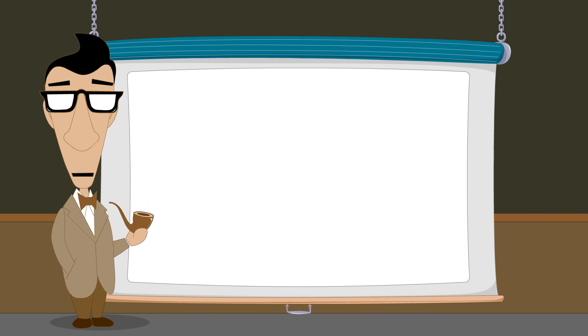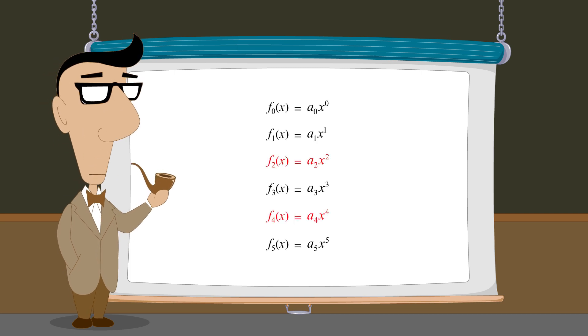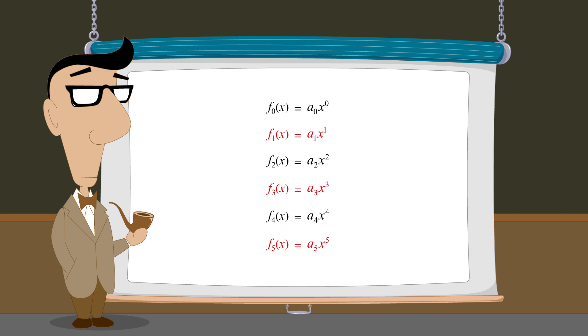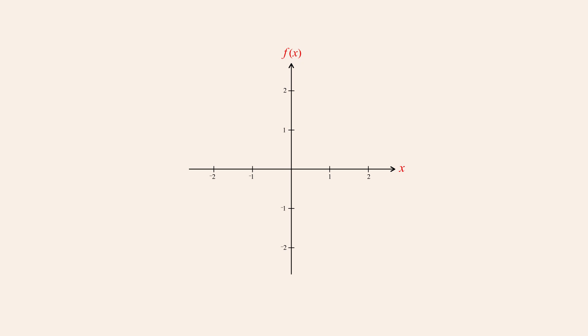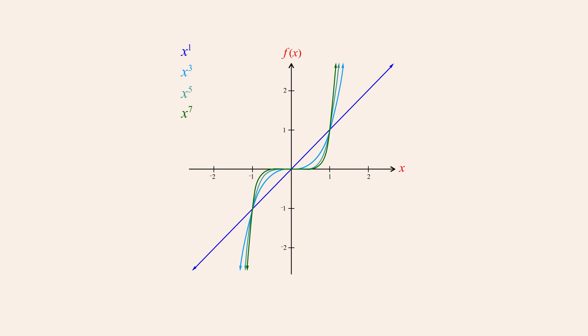So far, we have looked at graphs of even powers of x. But what about the graphs of odd powers? Let's compare the graphs of x to the first power, x cubed, x to the fifth power, and x to the seventh power. Just like even powers of x, these graphs all pass through the origin and the point one. However, instead of passing through the point negative one, odd powers pass through the point negative one on the opposite side.